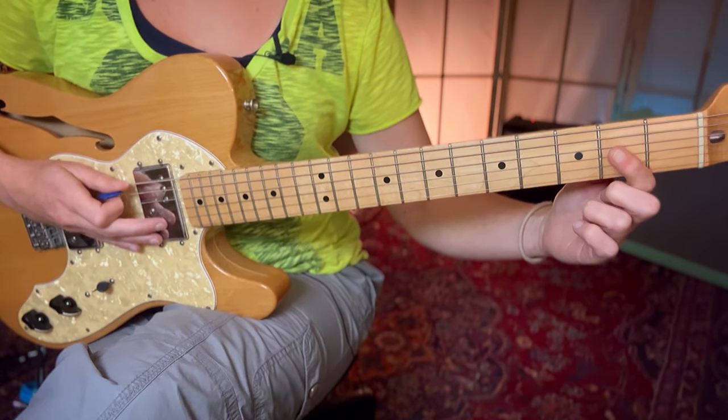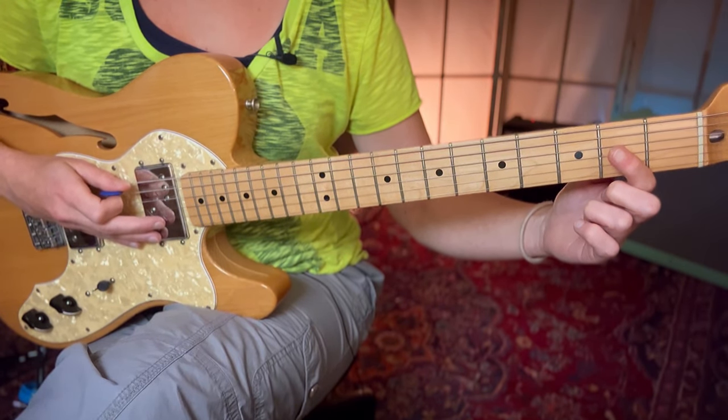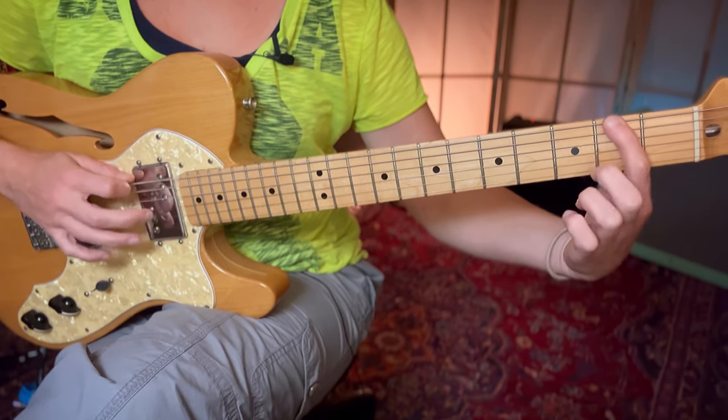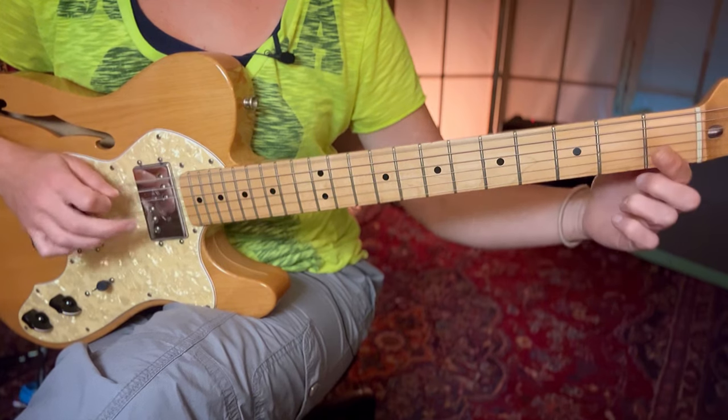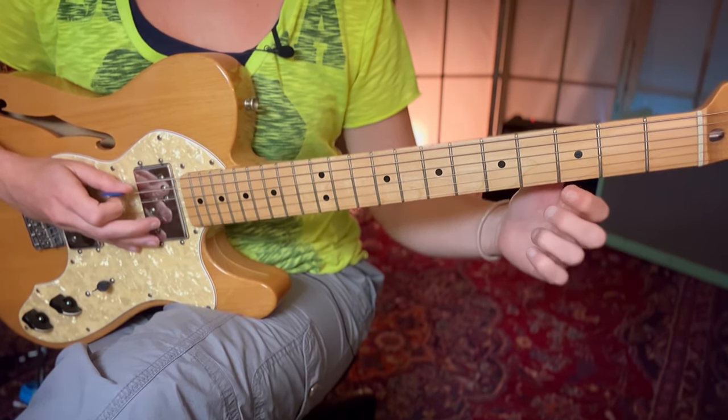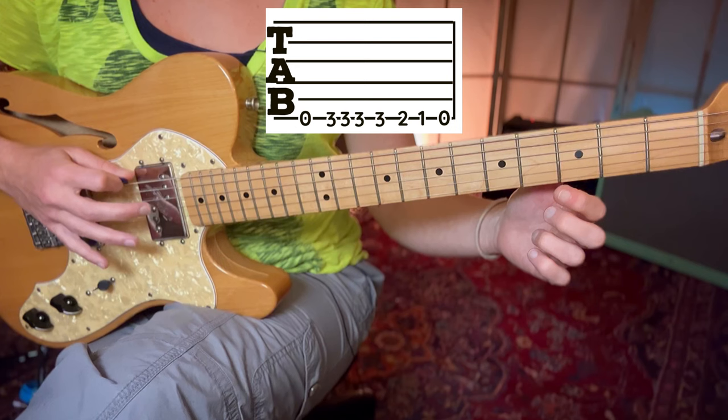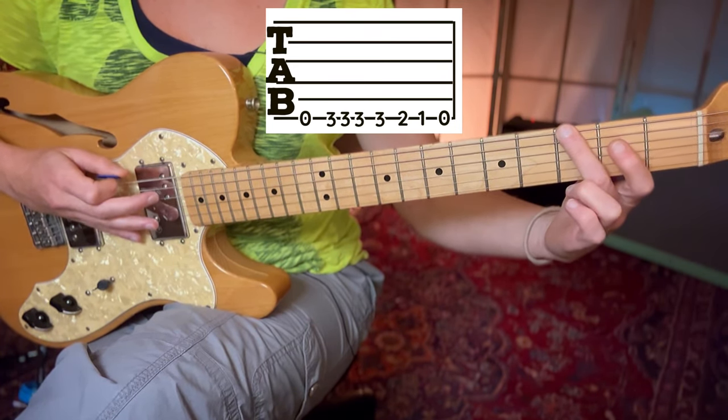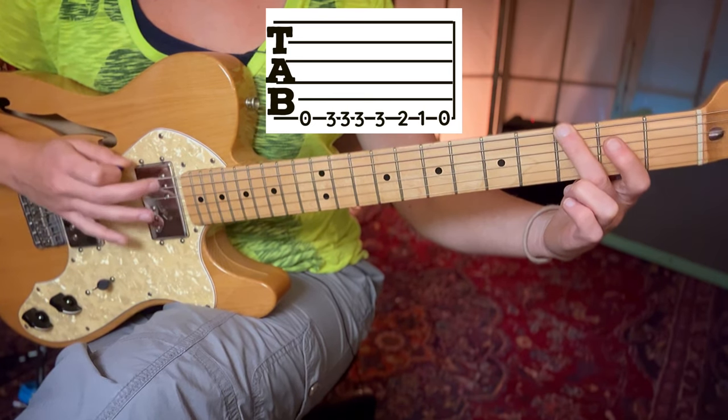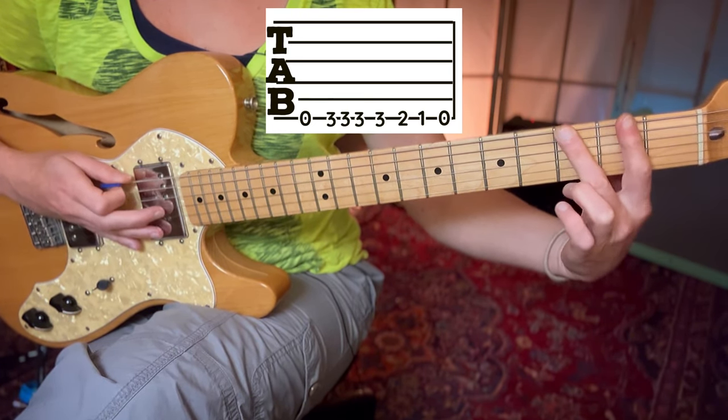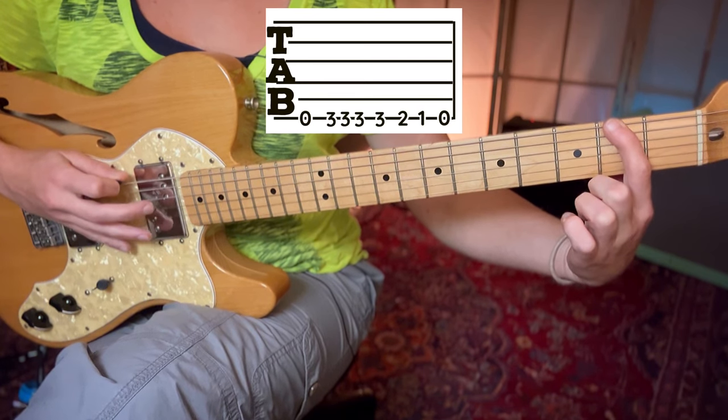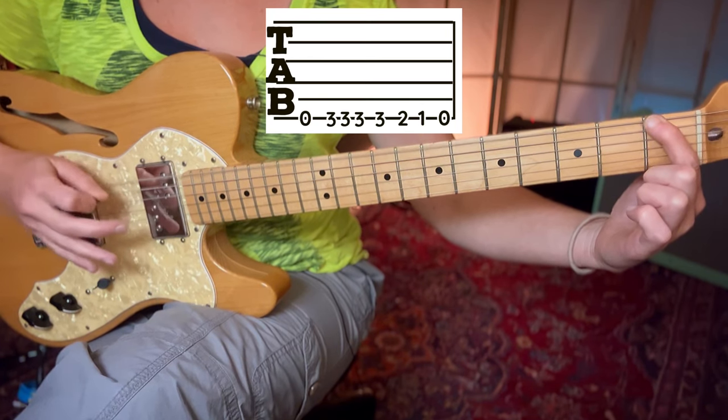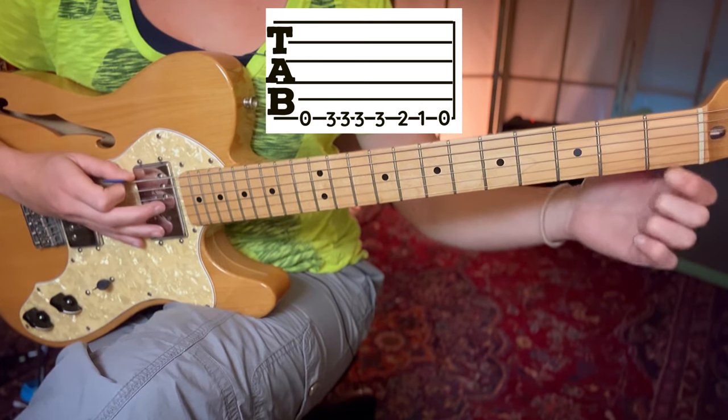We now have a slight variation. That plays open E string once down, middle finger third fret E string down up down down, first finger second fret E string. Take your first finger down to the first fret E string, up and E string.